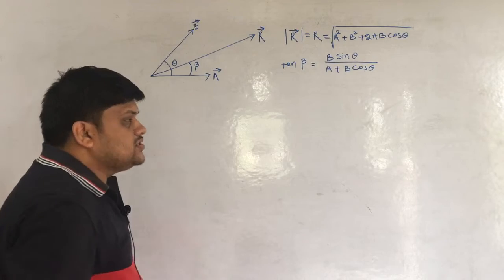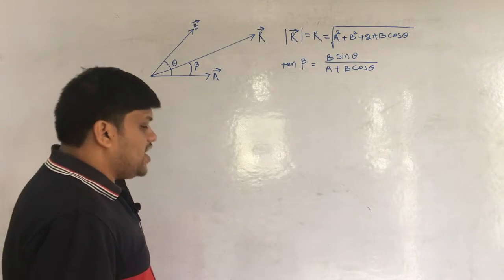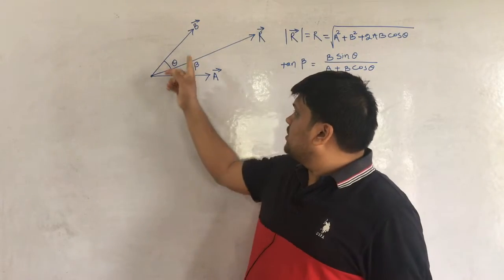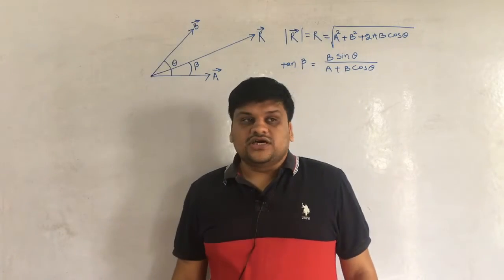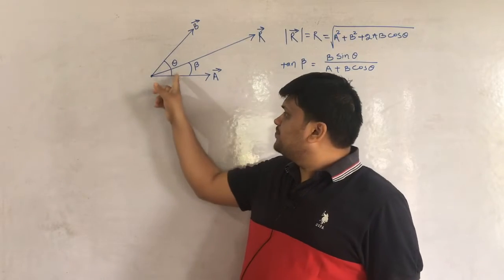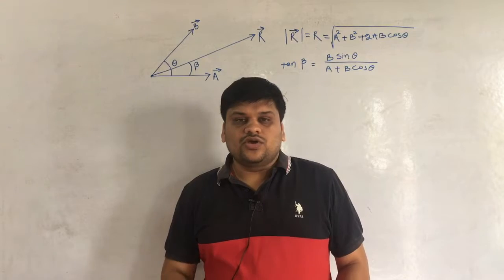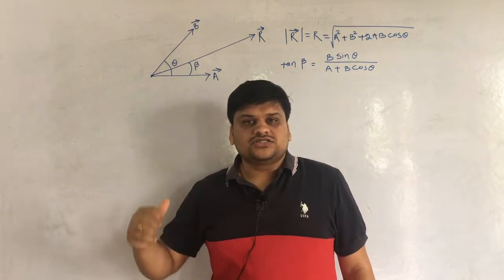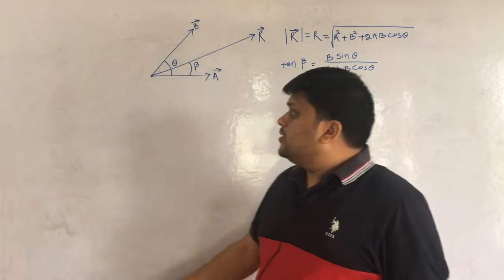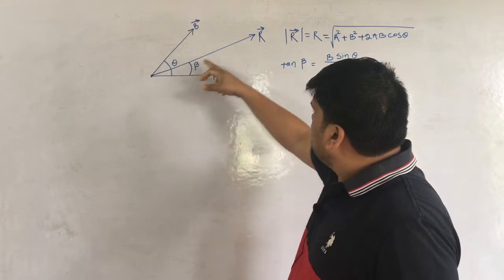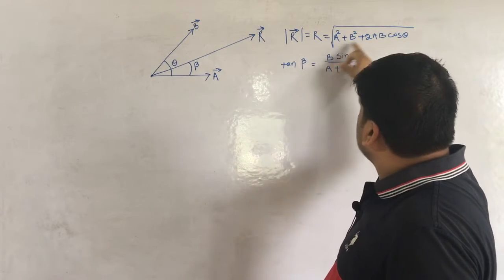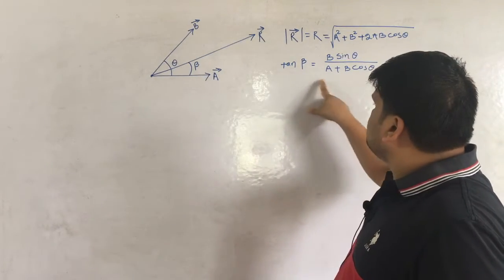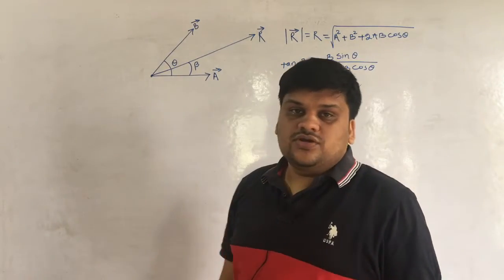These were the general formulas derived using the triangle law of vector addition. If two vectors A and B act at an angle theta to each other, you cannot get the resultant by simply A plus B. You have to use the triangle law formula to find the magnitude of R and the angle beta.